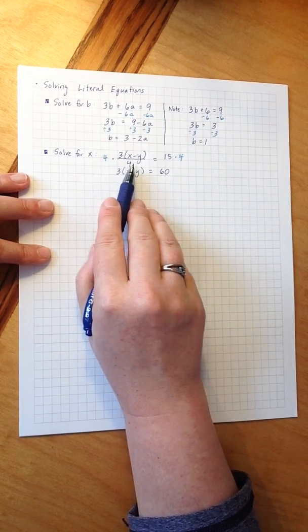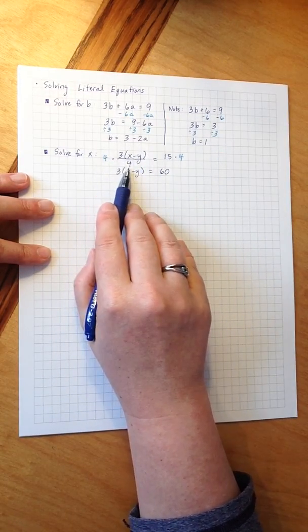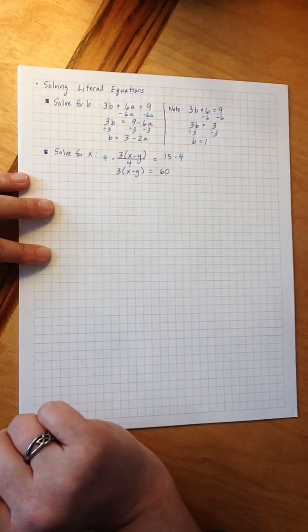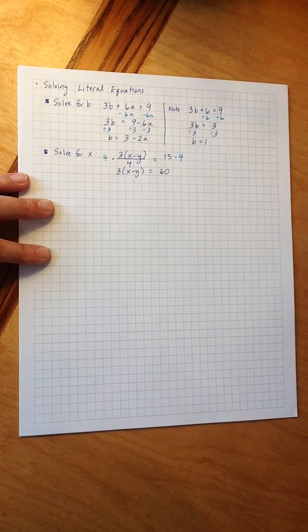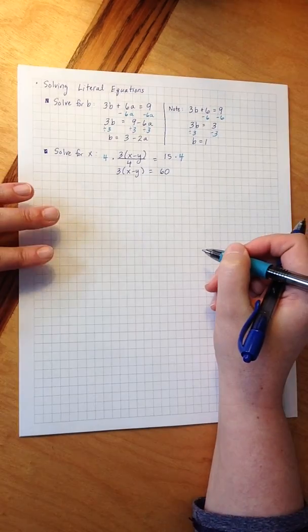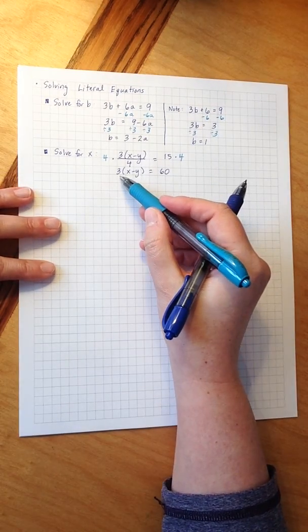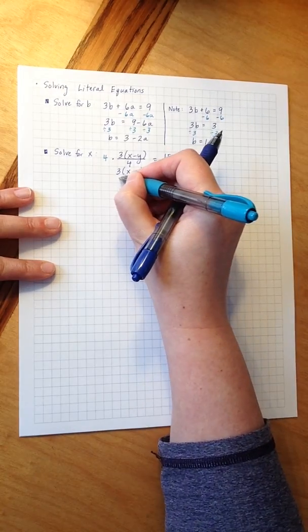The multiplying by 4 undoes the division by 4, and so those cancel each other out. They're inverses of each other.